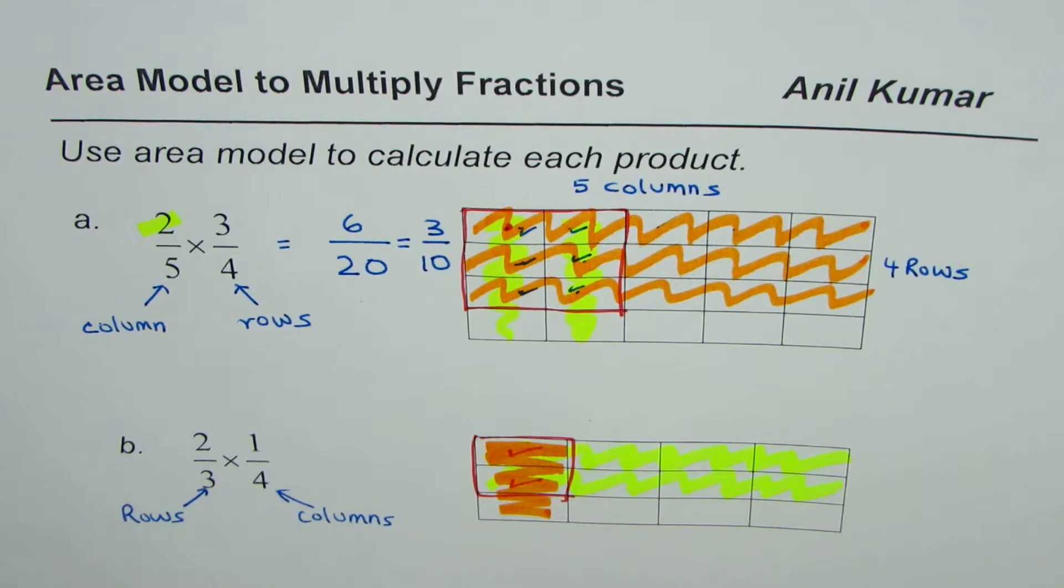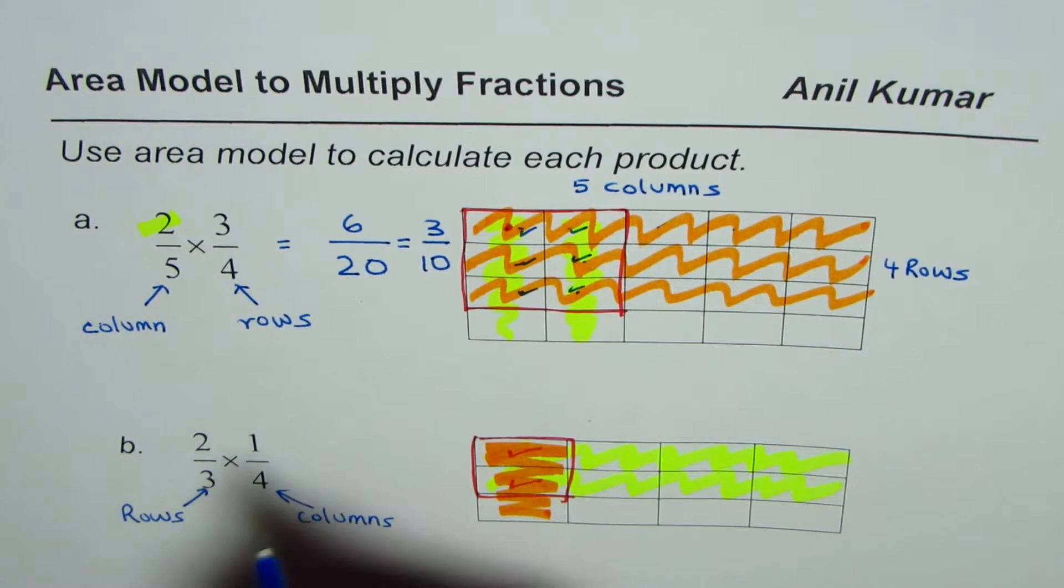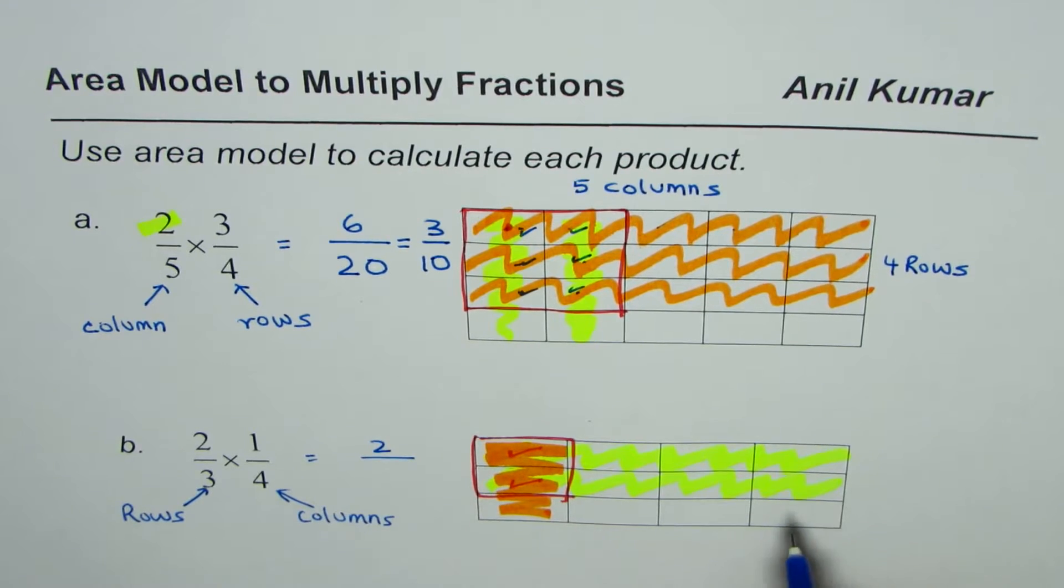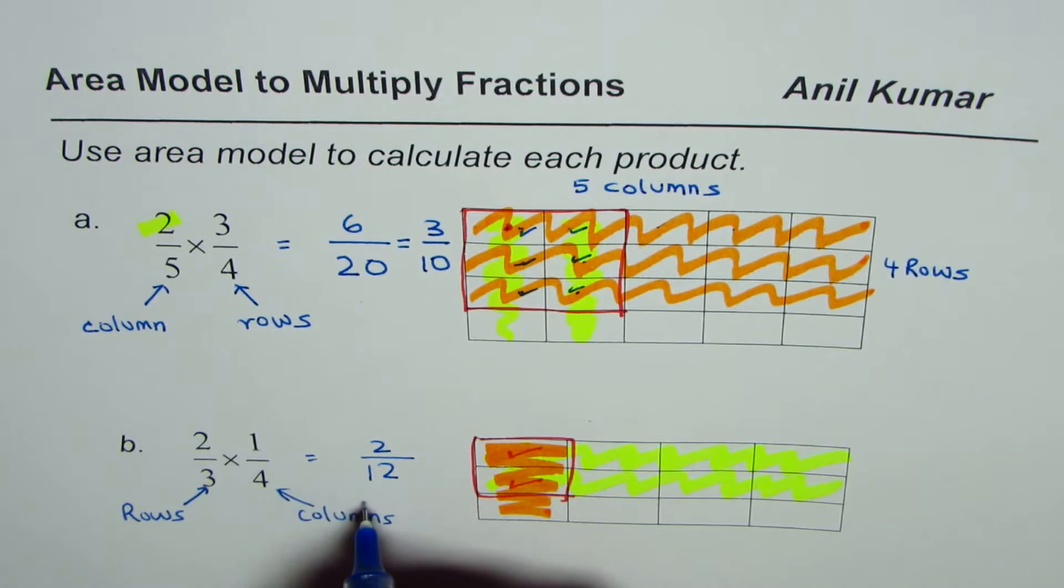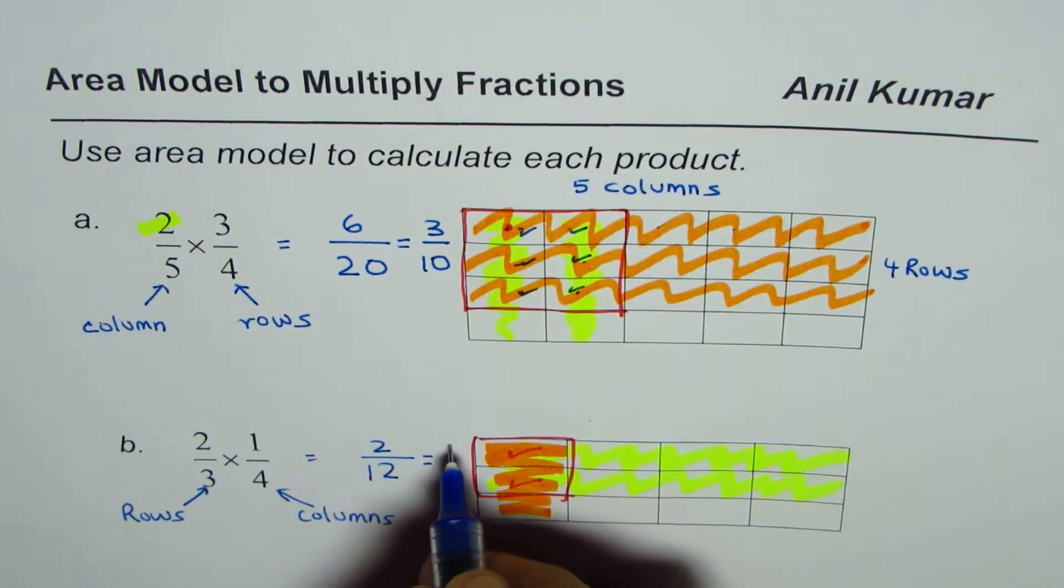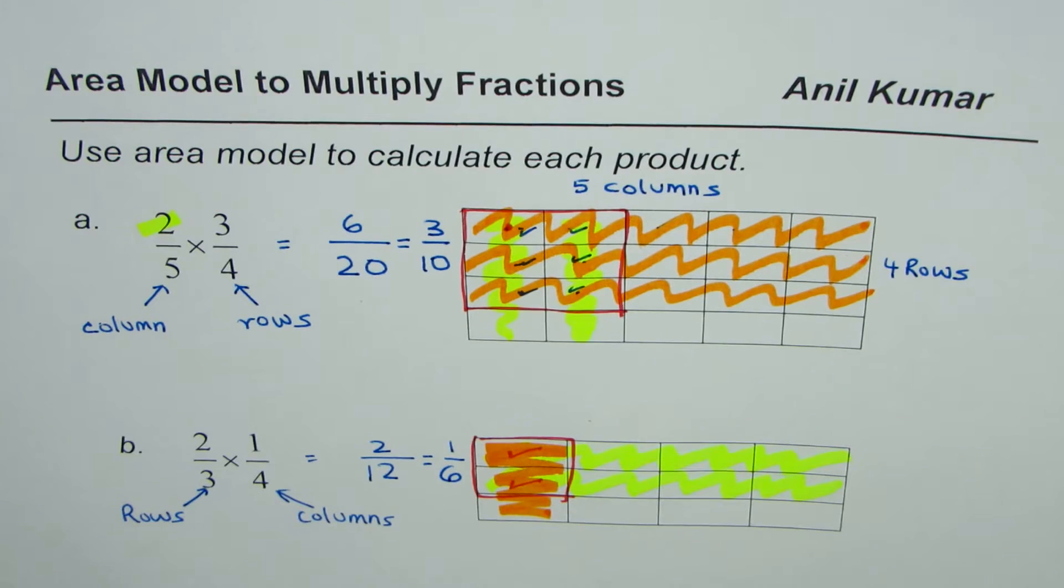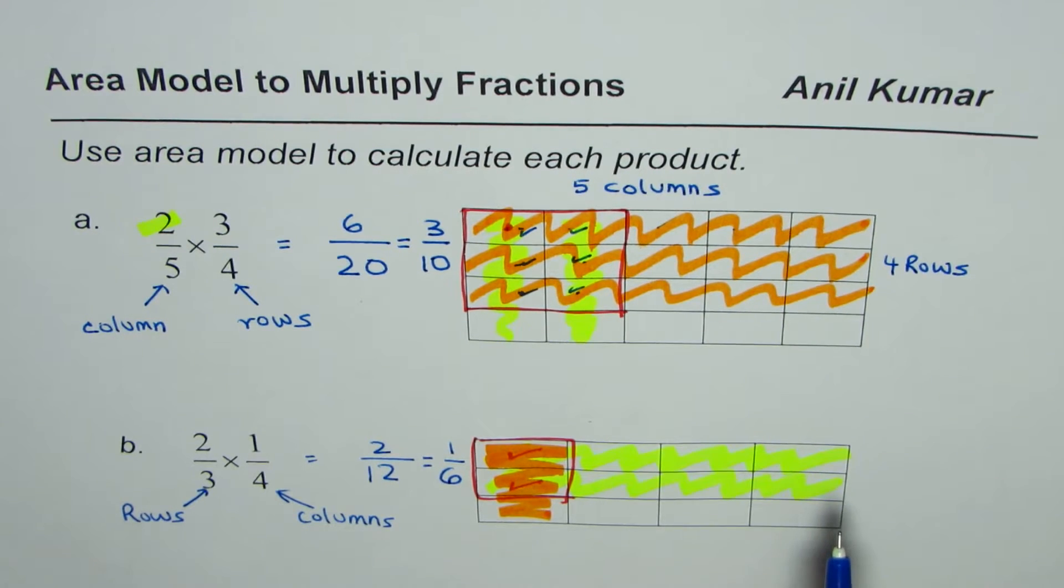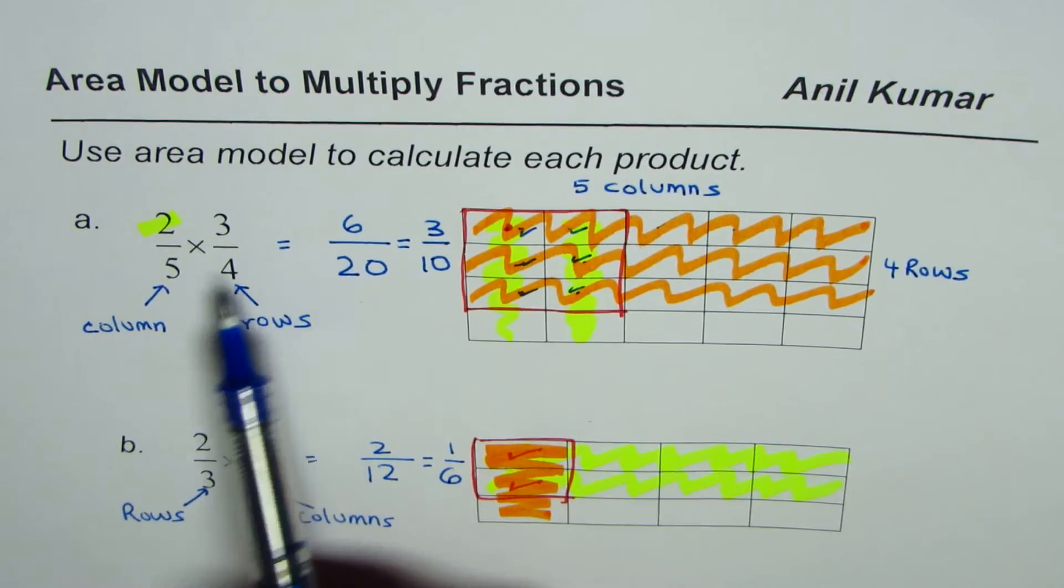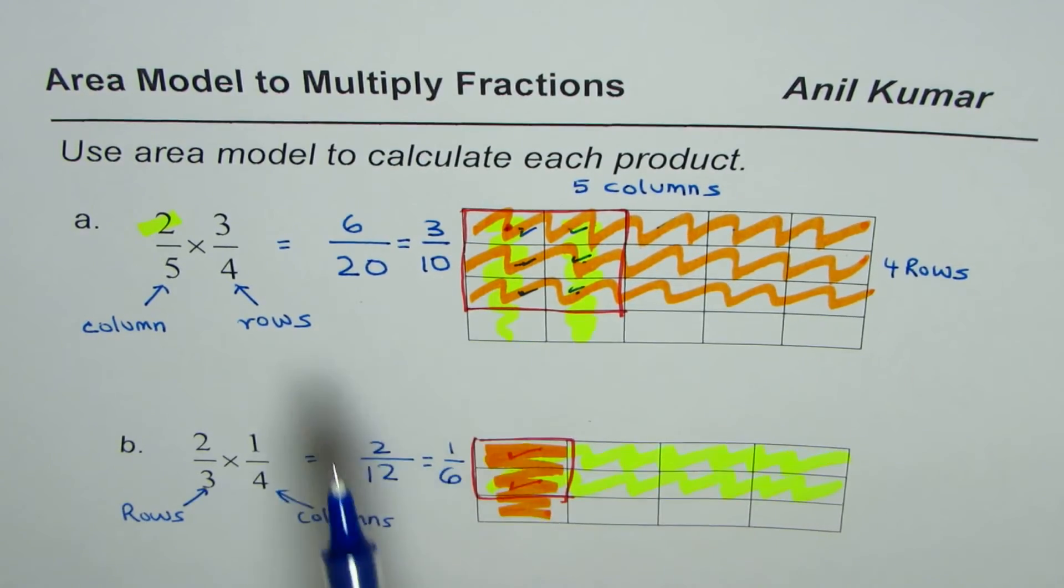Which has two units, and therefore we can write this answer as two out of, in all we have three times four, twelve. Two out of twelve which could be simplified as one out of six. You get an idea, so that is how we can use area model to find product of fractions. I hope the steps are absolutely clear.